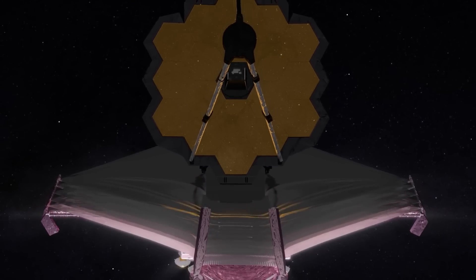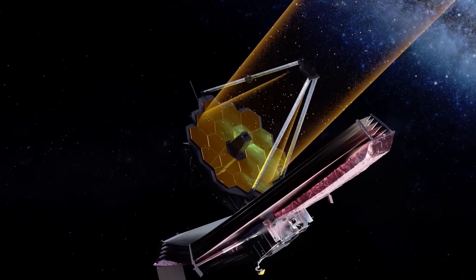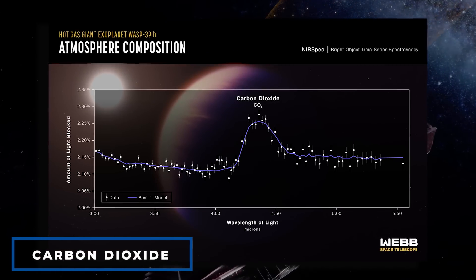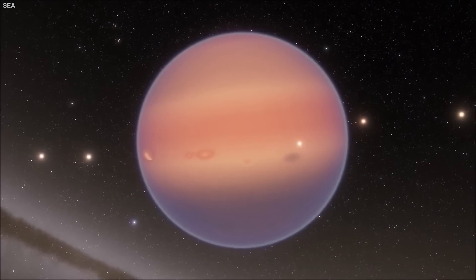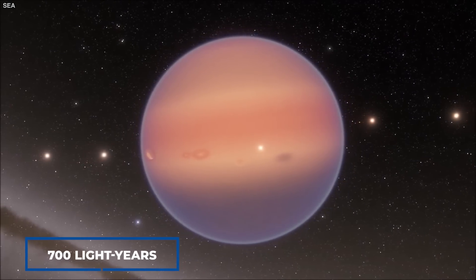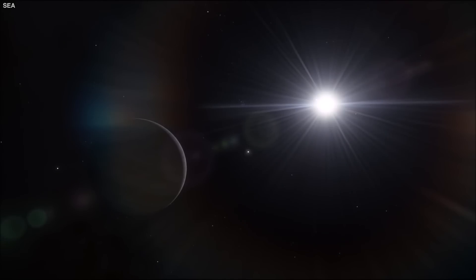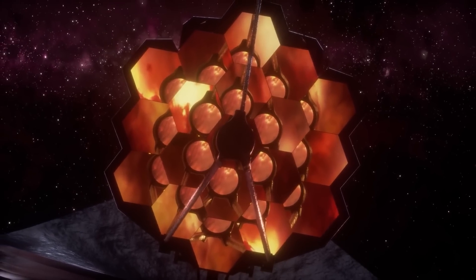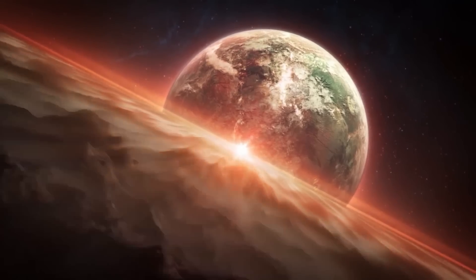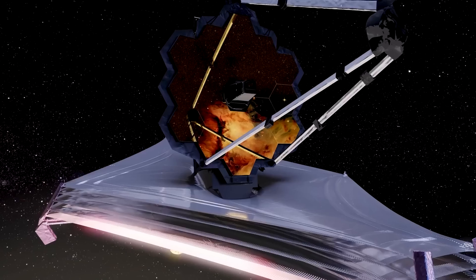NASA's James Webb Space Telescope has detected the first conclusive evidence of carbon dioxide in the atmosphere of a planet outside the solar system. This observation of a gas giant planet 700 light years away around a sun-like star provides crucial information on the planet's composition and development. Webb may be able to identify and study carbon dioxide in the thinner atmospheres of smaller rocky planets in the future, according to the discovery.